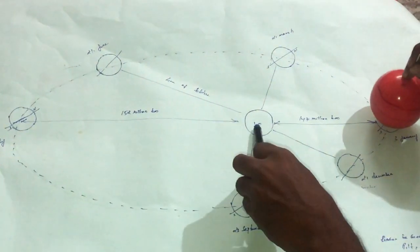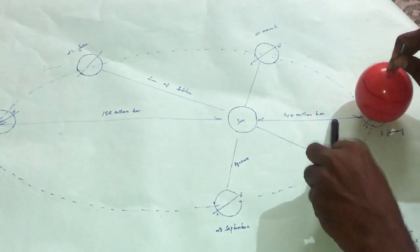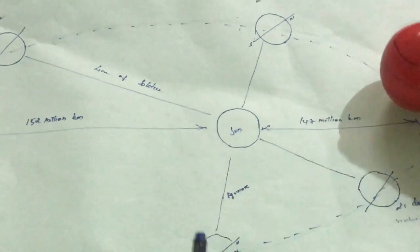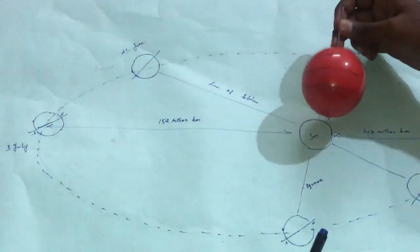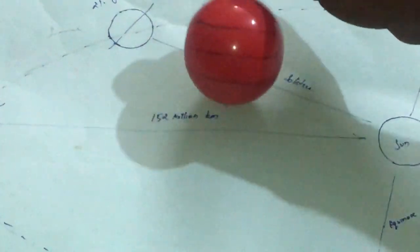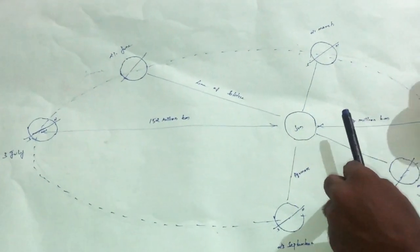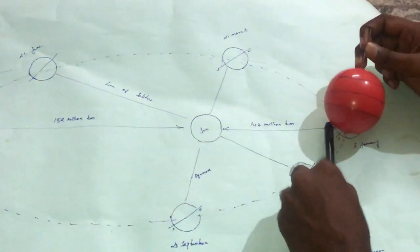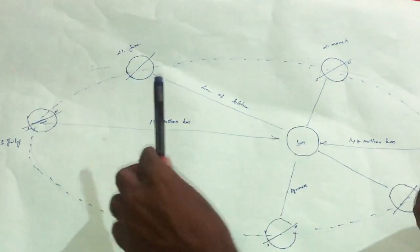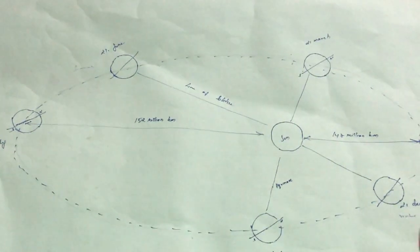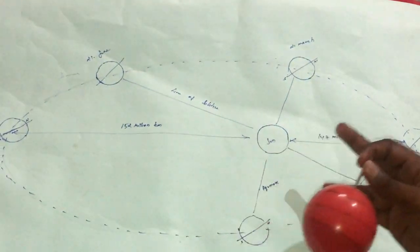The distance between the sun and the earth is around 147 million km in July, and around 152 million km in January. You can clearly understand that the distance is greater in July when compared to January.